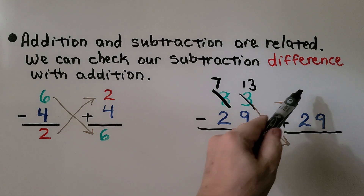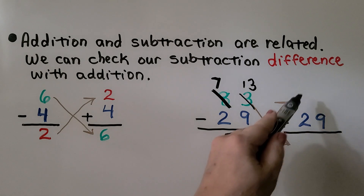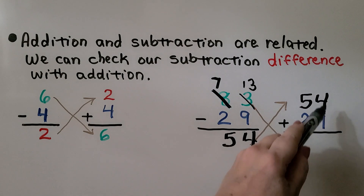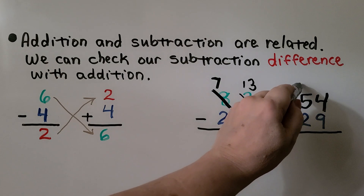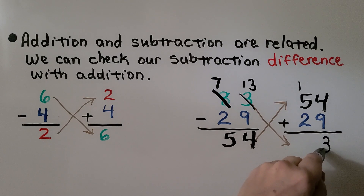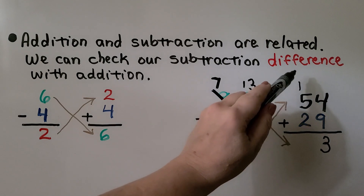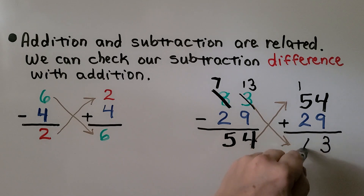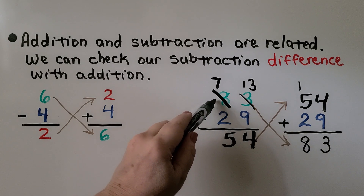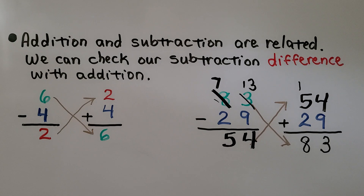We put the 54 up and add: 9 plus 4 is 13, so we regroup a ten, put the 3 in the ones place, and then 5 plus 2 plus 1 is 8. We have 83 — the same as our minuend. That means we did our math correctly. We can use addition to check our subtraction difference.